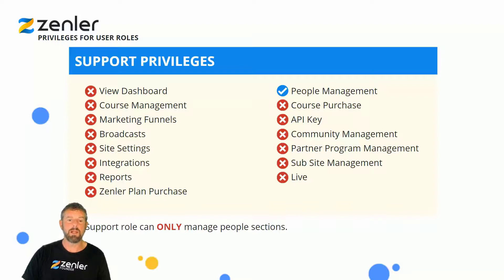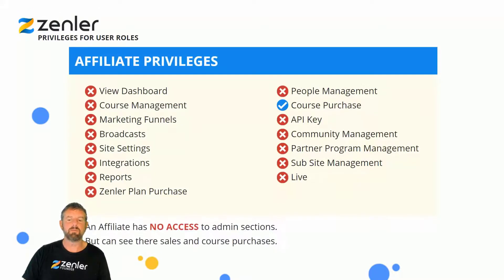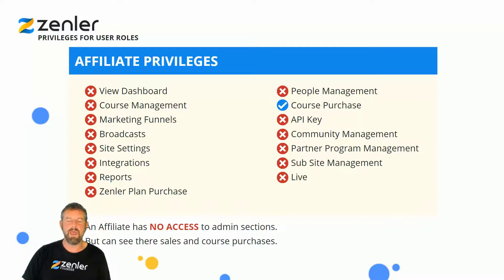For affiliate privileges, affiliates have no access to admin sections but they can see their sales and course purchases for their area — they can view whether they've made any sales.